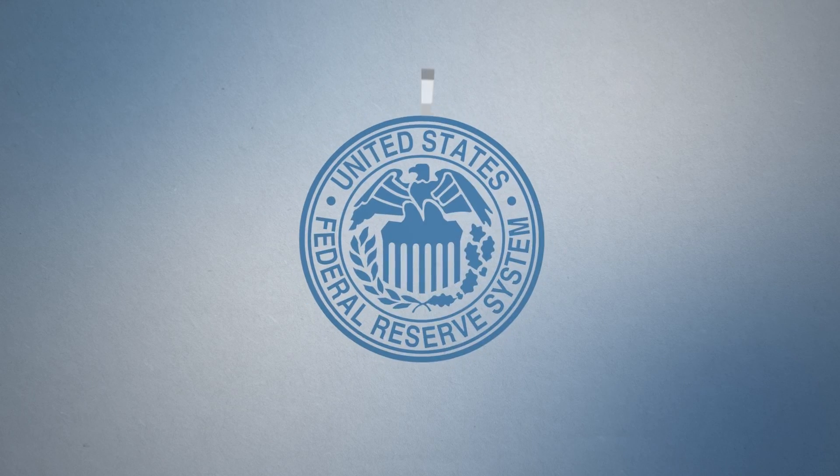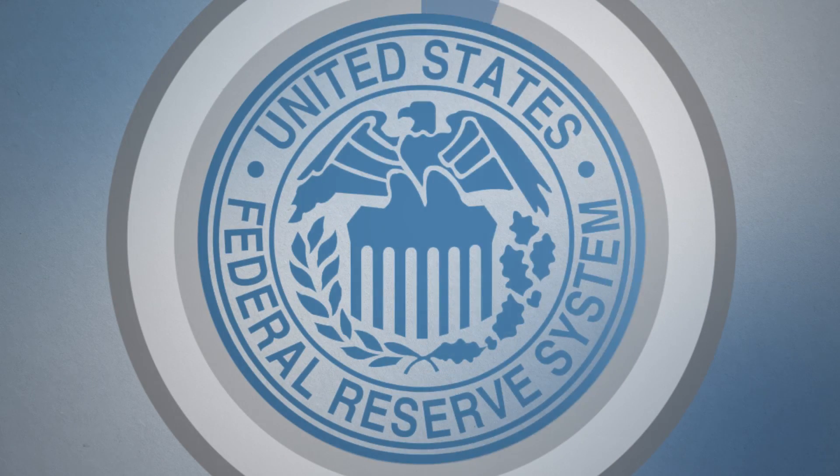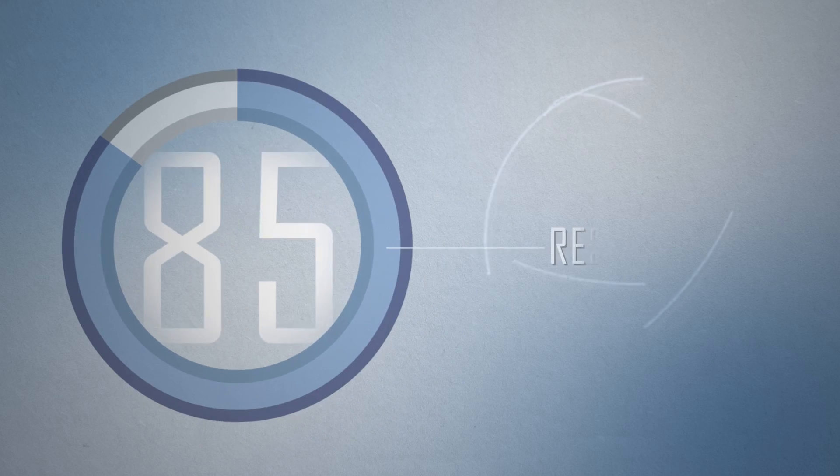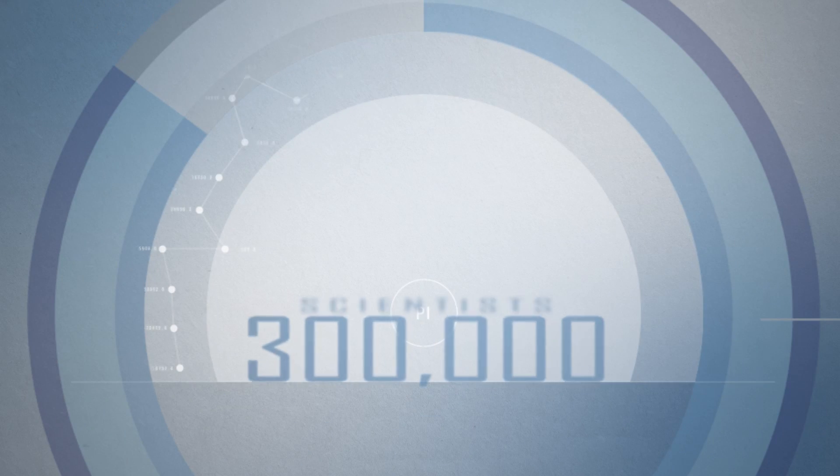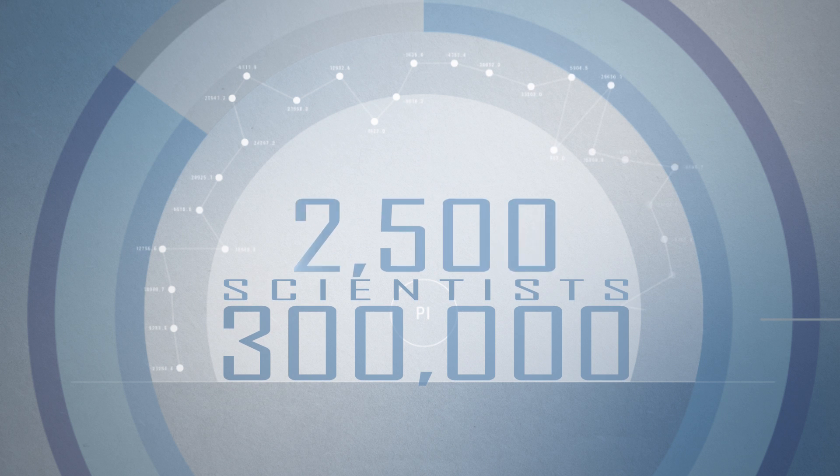NIH is federally funded, and sustaining this funding is critical. Eighty-five percent of their funds are distributed through research grants. These grants support the biomedical research of over 300,000 scientists at 2,500 research institutions across all 50 states.